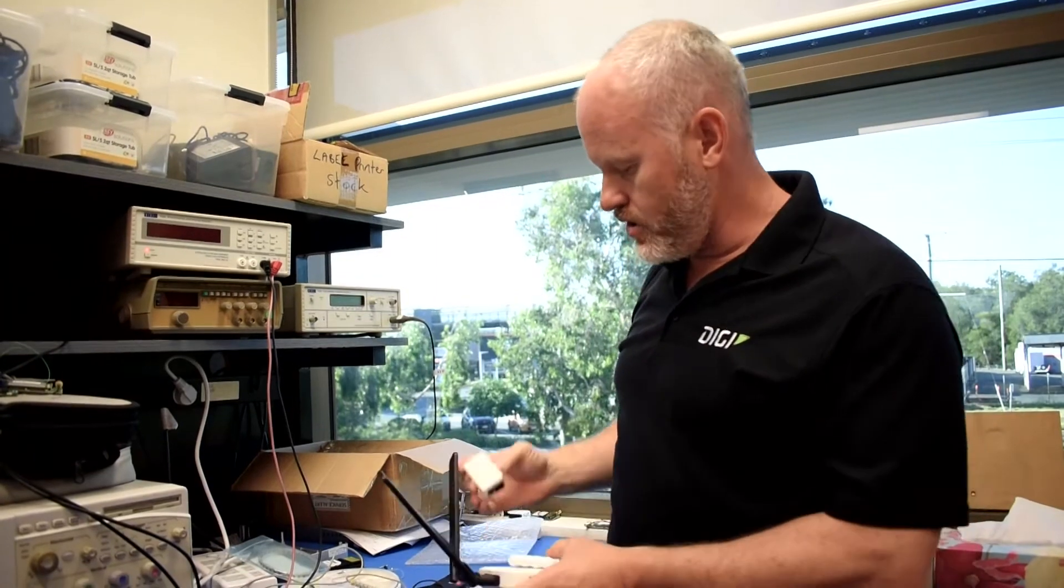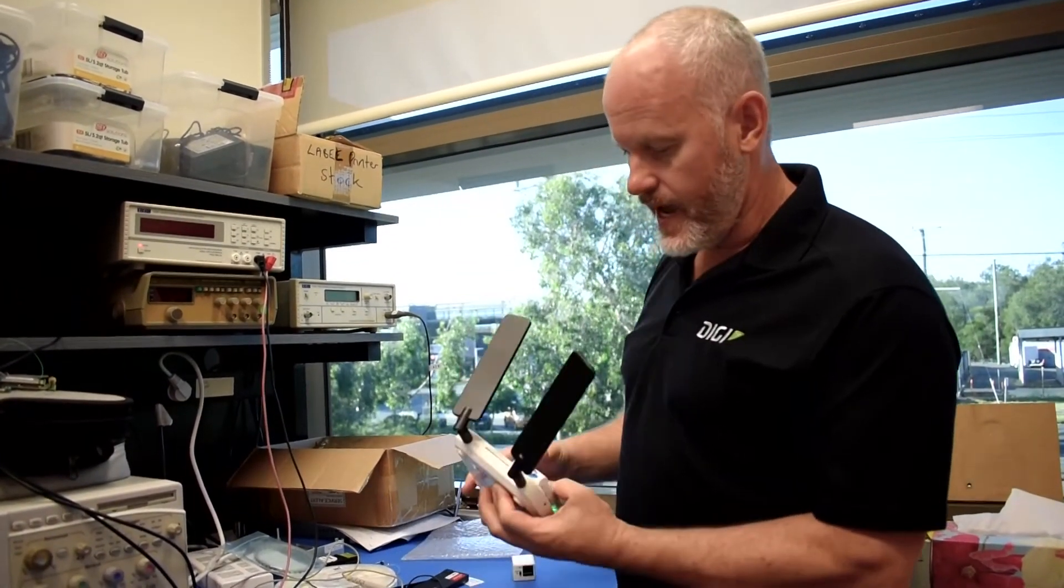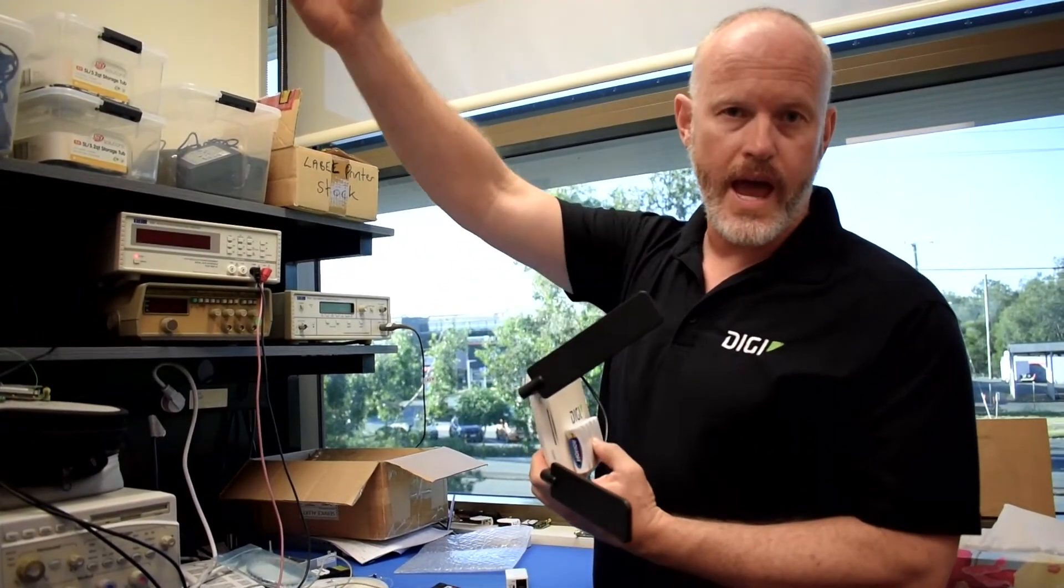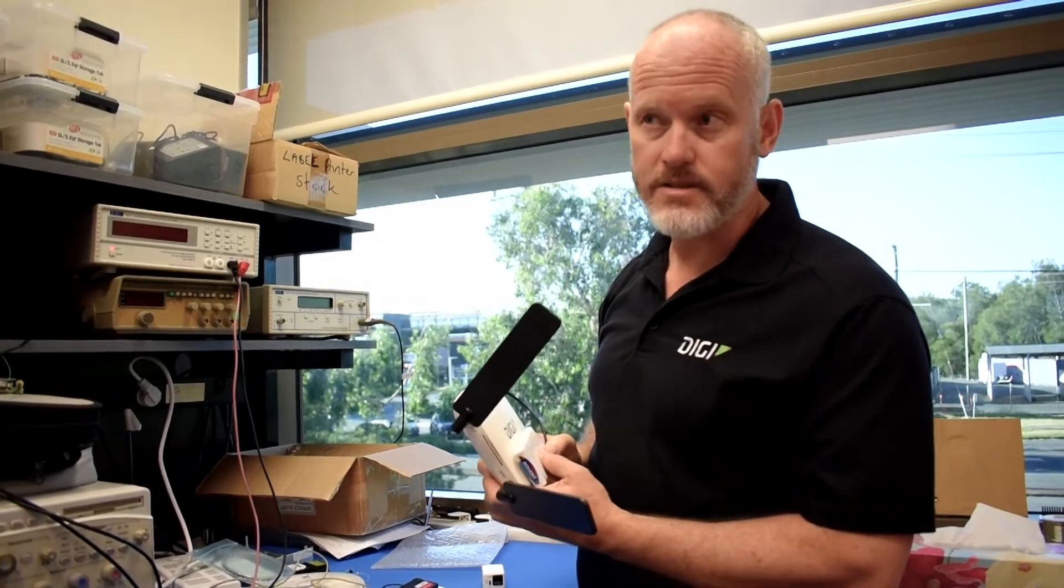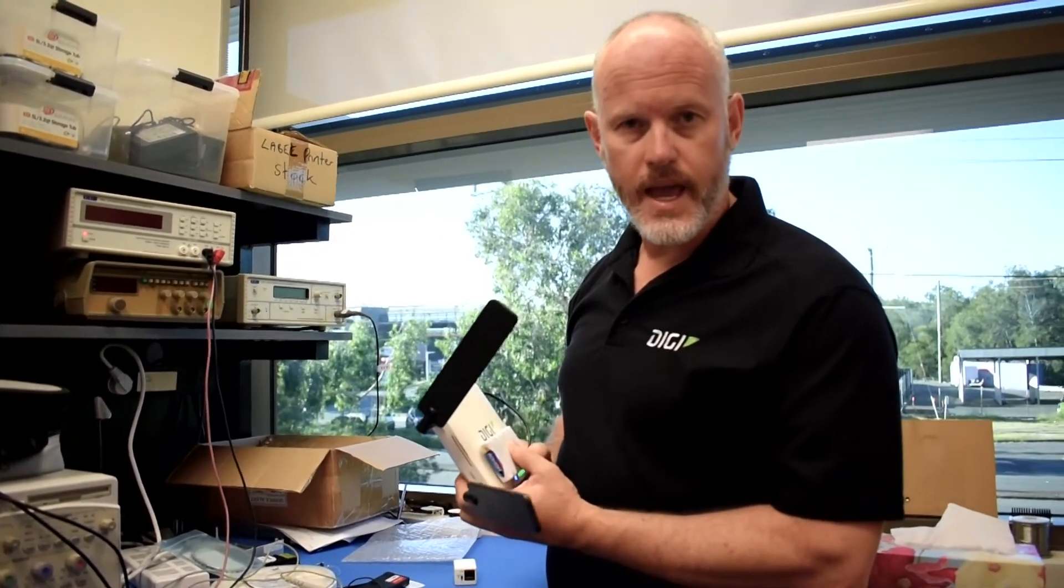So what we can do is use this Power over Ethernet injector. We'll actually power the device through its Ethernet port, run the cable back to our router in the central part of the office, and go from there.